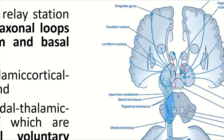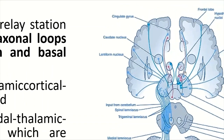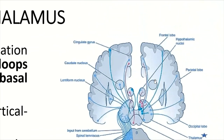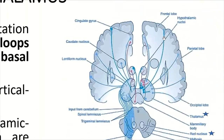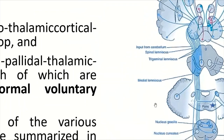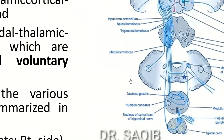The efferents from the thalamus go to the hypothalamus and to the whole cerebral cortex — these are the main efferents going to the various parts of the cerebral cortex. The pons and cerebellum connections are also included as previously discussed.